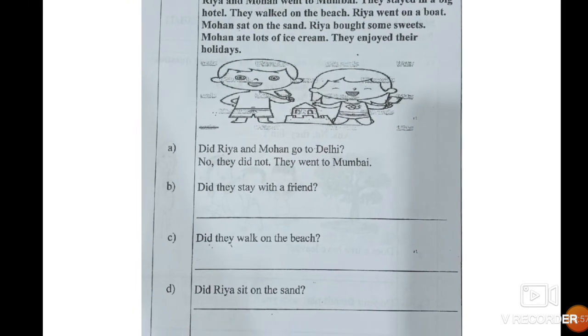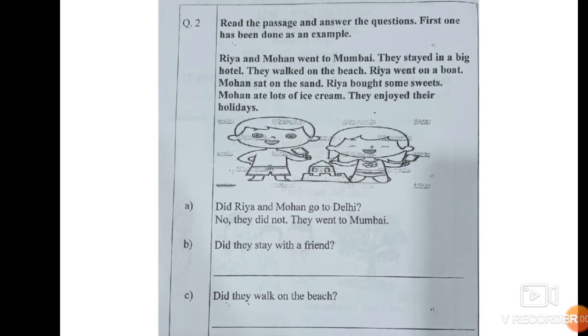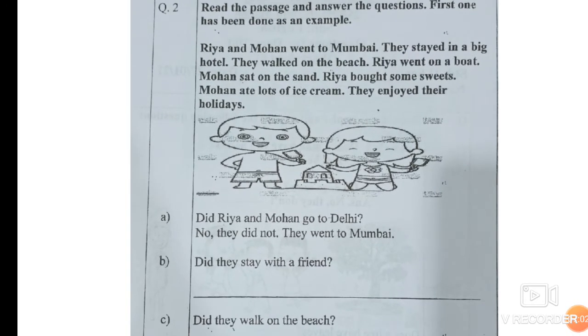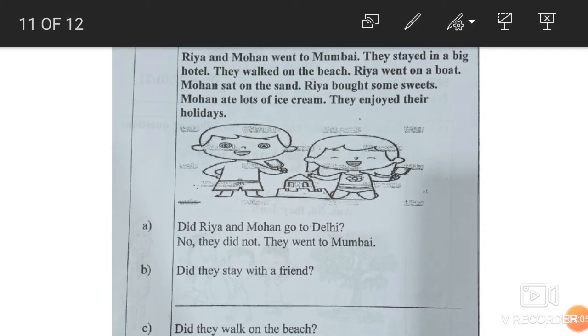Next, there is a paragraph. Now look. Riya and Mohan went to Mumbai. They stayed in a big hotel. They walked on the beach. Riya went on a boat. Mohan sat on the sand. Riya bought some sweets. Mohan ate lots of ice cream. And they enjoyed their holidays. So let us begin.